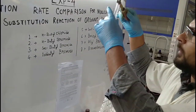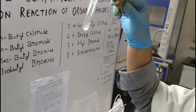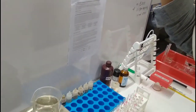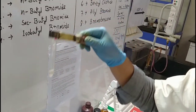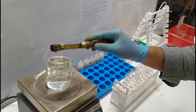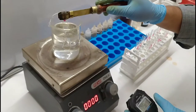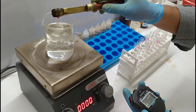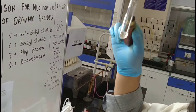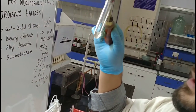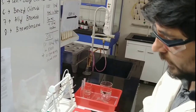The color of the solution changed a little bit from initial at 7 minutes 30 seconds, but still no precipitation — only color changed. 8 minutes completed, still no PPT, but only color changed. So our first SN1 experiment for the first halide is completed.